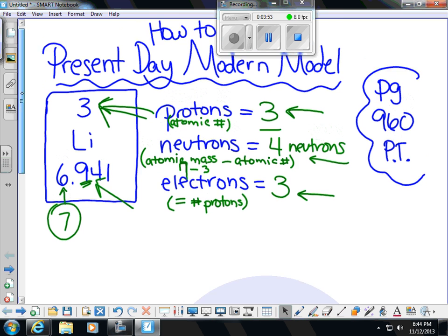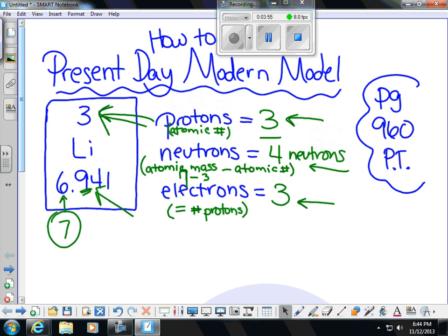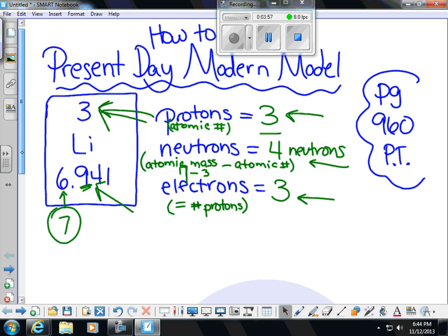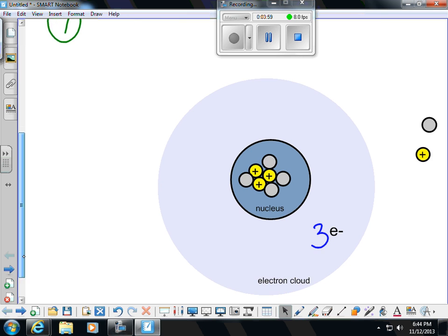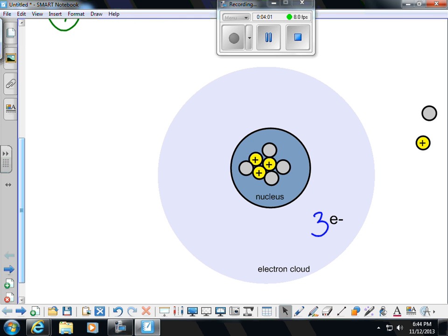We'll double check again. 3 protons, 4 neutrons in the nucleus, and 3 electrons. 3 protons, 4 neutrons, 3 electrons. That is your modern-day model of lithium.